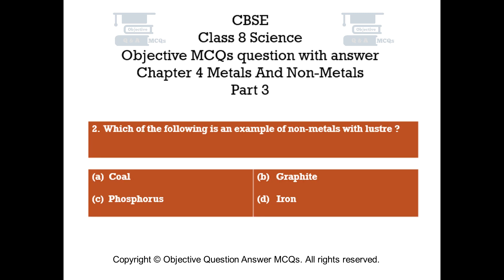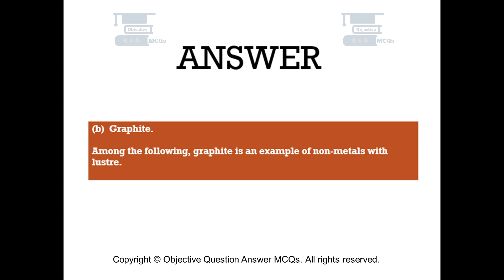Question number 2. Which of the following is an example of non-metals with luster? Option A: coal. Option B: graphite. Option C: phosphorus. Option D: iron. The right answer is option B. Graphite. Graphite is an example of non-metals with luster.